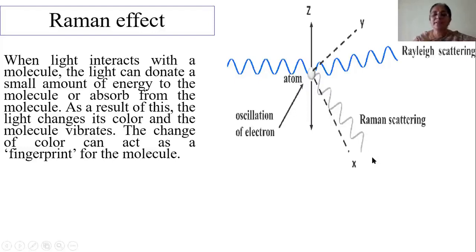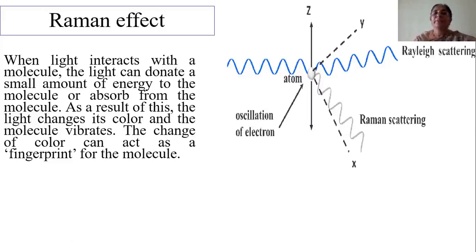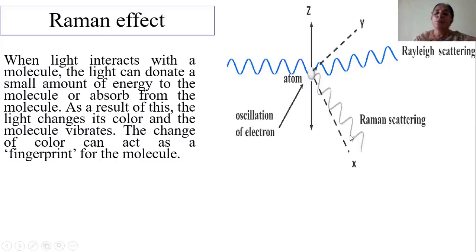The incident light donates a little energy to the molecule. As a result, the molecule gets excited and the incident photon is scattered with lower energy, so its frequency decreases. There is another possibility: when the light photon strikes the atom or molecule, the molecule could give a little energy to the incident photon. As a result, the photon gets scattered with more energy, so the scattered light has a higher frequency. Thus, during this interaction, the frequency of the incident photon when scattered could increase if it absorbs energy from the molecule, or decrease if it donates energy to the molecule. As a result, the scattered light changes its color.